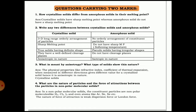Third question: what is meant by anisotropy, and what type of solids show this nature? Physical properties like refractive index and coefficient of thermal expansion, when measured in different directions, give different values for a crystalline solid — hence it is anisotropic in nature. Only crystalline solids show anisotropic nature; amorphous solids do not.